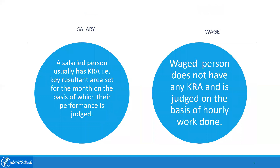A salaried person usually has KRA — Key Result Areas — set for the month, on the basis of which their performance is judged. A wage worker does not have any KRA and is judged on the basis of hourly work done.